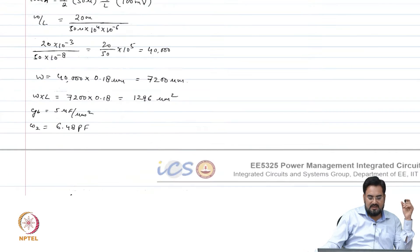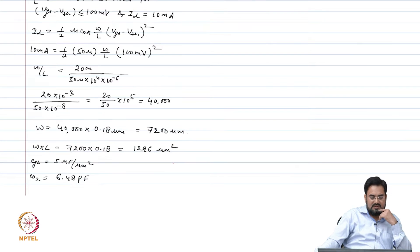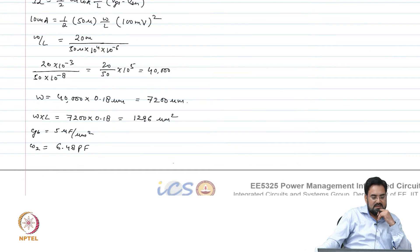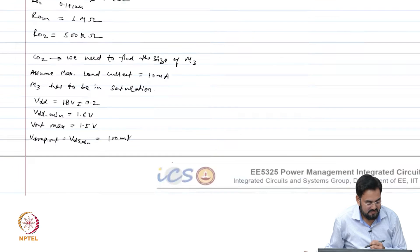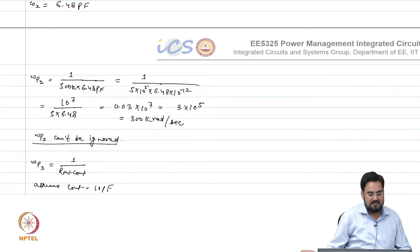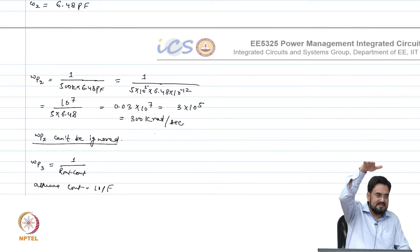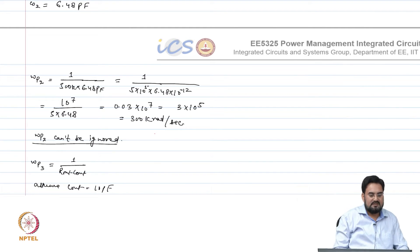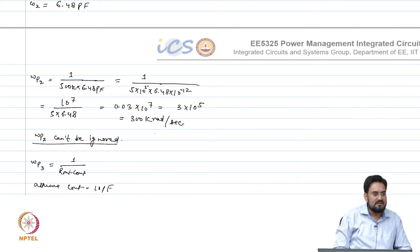Assume the gain of the first stage is 40 dB and the second stage is 20 dB, giving a total of 60 dB DC gain. Starting at the first pole at 300 kilo radian per second, over 3 decades the UGB will fall at 300 mega radian per second. So both the other poles are outside your UGB.